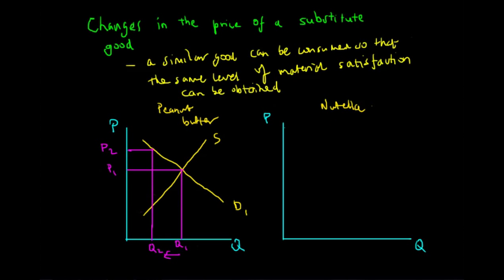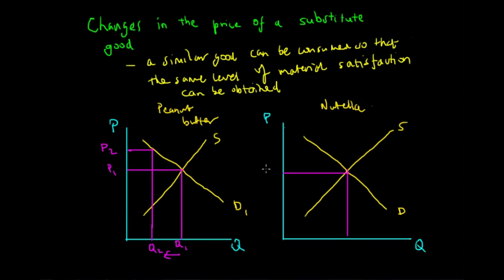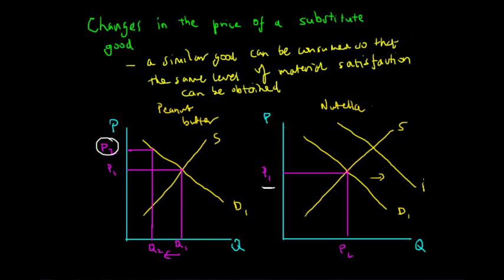Assuming the demand and supply curves for Nutella are similar to peanut butter — supply is upward sloping, demand is downward sloping — we also have a corresponding equilibrium at P1 and Q1. Now because the price of peanut butter has increased to P2, it is more expensive than Nutella at P1, so people would opt to buy more Nutella. At every price level the quantity of Nutella demanded increases, so the demand curve shifts to the right from D1 to D2.